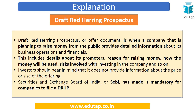To answer this we must know about the Draft Red Herring Prospectus. A Draft Red Herring Prospectus, or offer document, is filed by a company planning to raise money from the public and provides detailed information about its business, operations, and financials. This is an initial, not final, prospectus filed by the company. It presents different details so investors can know about the company coming up with a share issue. Details include information about promoters, reasons for raising money, how the money raised will be used, and the various risks involved in investing.